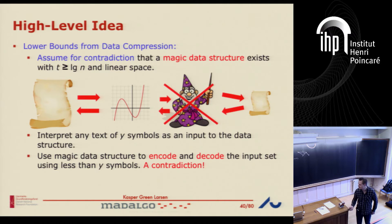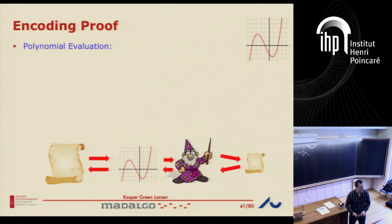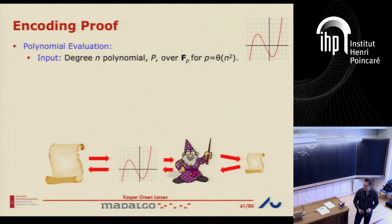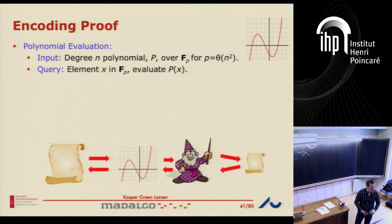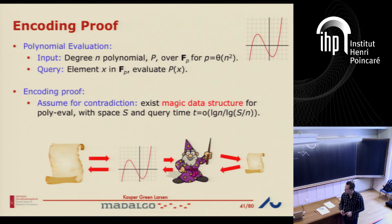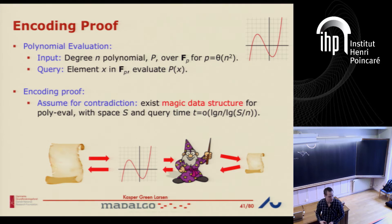This is an encoding proof. Let's do it for the polynomial evaluation problem. The input is this polynomial; we want to compress it. The data structure problem we're proving the lower bound for is this evaluation problem — we can evaluate the polynomial. Let's assume we have a data structure for polynomial evaluation that has space s and query time faster than log n over log(s/n).